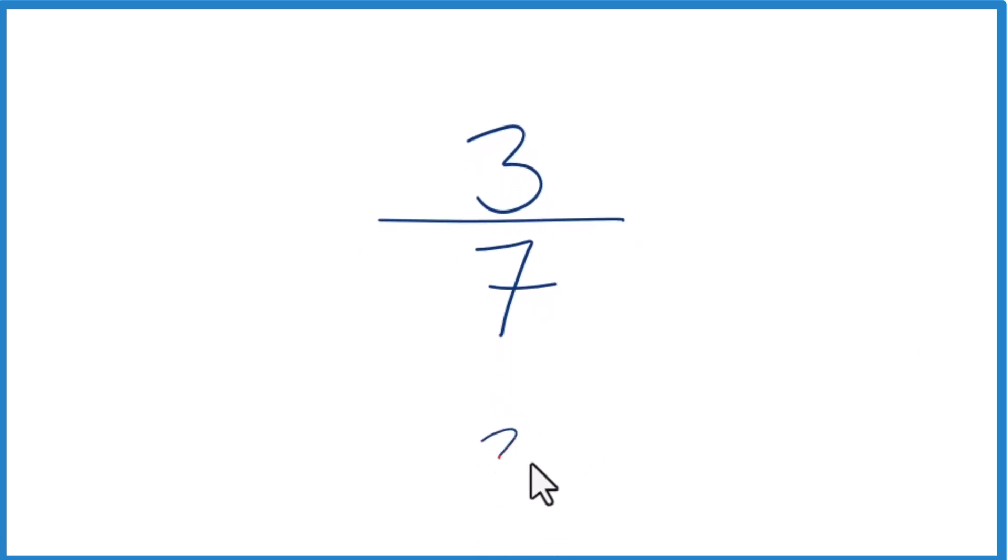So let's take 3 and see how many times 7 goes into 3. 7 doesn't go into 3, but we could call this 30 as long as we put a decimal point up here.